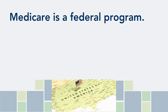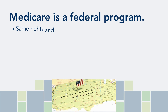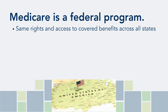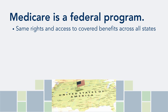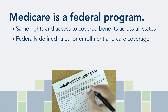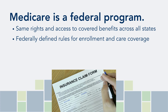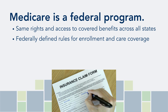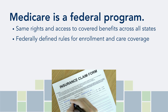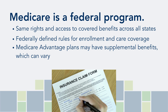Because Medicare is a federal program, a person who has Medicare in one state has all the same rights and access to the same covered benefits as a person who has Medicare in another state. Federal law and federal agencies set the rules for who can enroll in Medicare and what kinds of care are covered. The services that Medicare can pay for are defined in federal law and are the same for all people with Medicare. People who choose to enroll in a Medicare Advantage plan may also have coverage for supplemental benefits, which can vary from plan to plan.